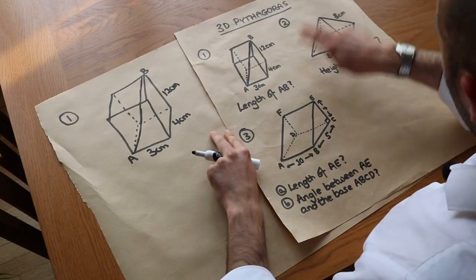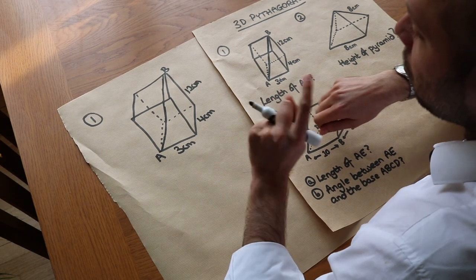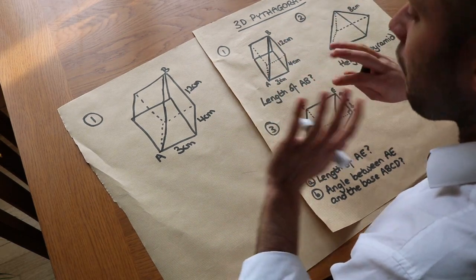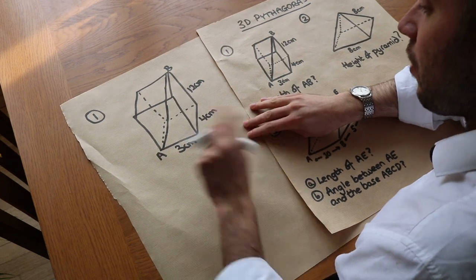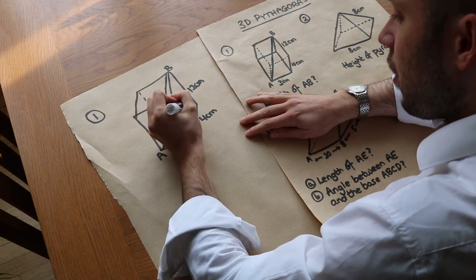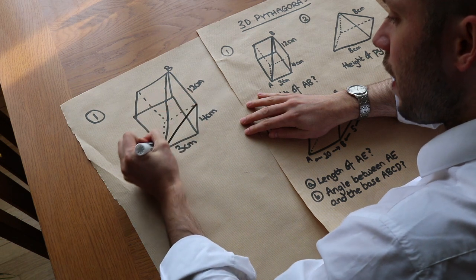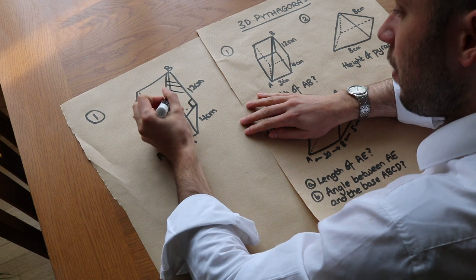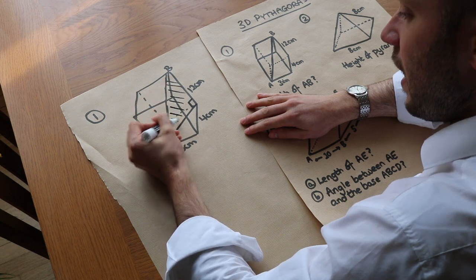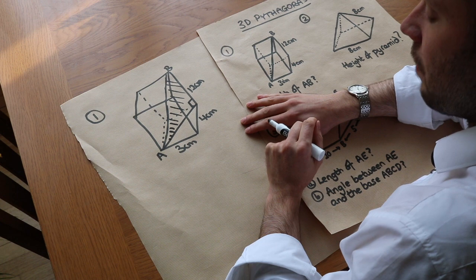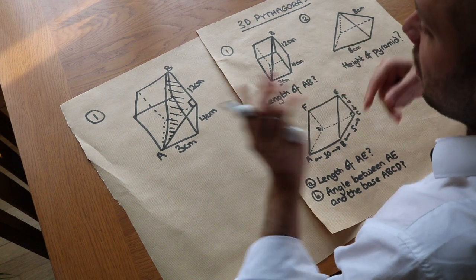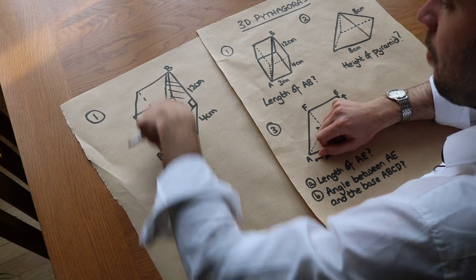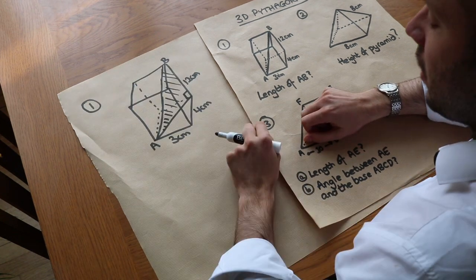The key to all these problems is to try and find a 2D right-angle triangle floating in 3D space. If I want this length, you can see that if I add this line here there's a right angle, and if I shade this triangle you can see it more clearly. We've effectively turned a 3D problem into a 2D problem, and we're trying to find the hypotenuse of this 2D triangle.